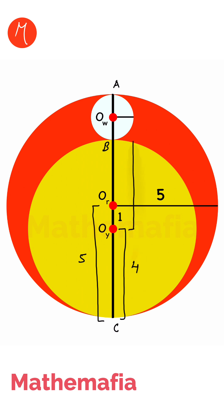This means OyB is also 4 because this is the radius of the yellow circle. From here we can conclude that OrB is 4 minus 1, so this will be 3. Now we know that OrA is the radius of the red circle and its value is 5.